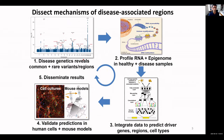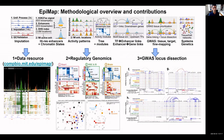Our team and many others have taken a systematic approach for dissecting the mechanisms underlying genetic associations. We start with disease genetics across both common and rare variants, systematically profile RNA and the epigenome in healthy and disease samples, integrate the data to predict driver genes, regions, and cell types, and then validate our predictions in human cells and mouse models.